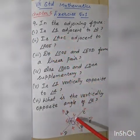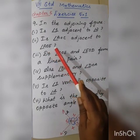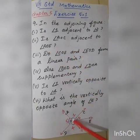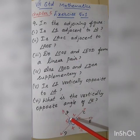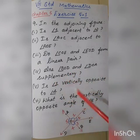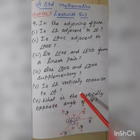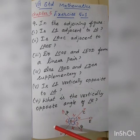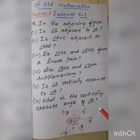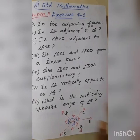The first question is: is angle 1 adjacent to angle 2? The second question is: is angle AOC adjacent to angle AOE? The third one: do COE and EOD form a linear pair? The fourth one: are BOD and DOA supplementary? The fifth one: is angle 1 vertically opposite to angle 4? The sixth one: what is the vertically opposite angle of angle 5?